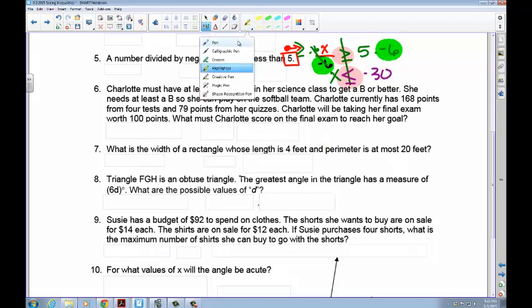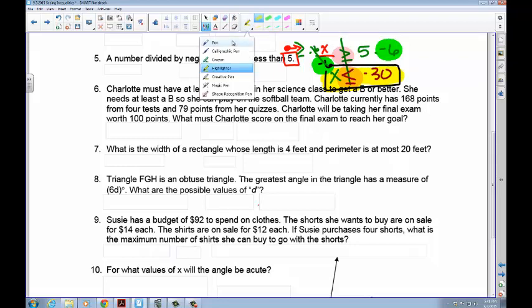That takes care of our symbolic answer. And now let's work on our number line form. So this is our symbolic right here. Now we're going to work on the number line. So we start at negative 30 and we decide if x is less than or equal to negative 30, it could be equal to negative 30 or less than. And that takes care of our symbolic. So this one right here is our symbolic answer.